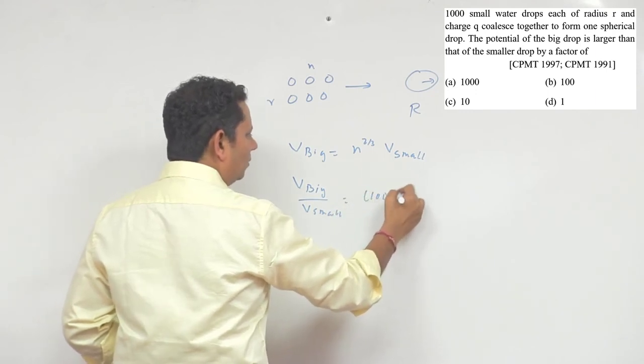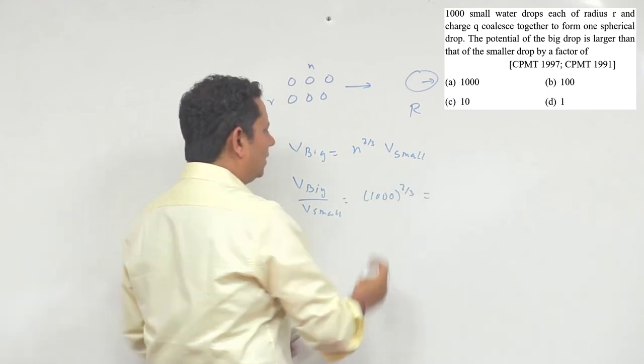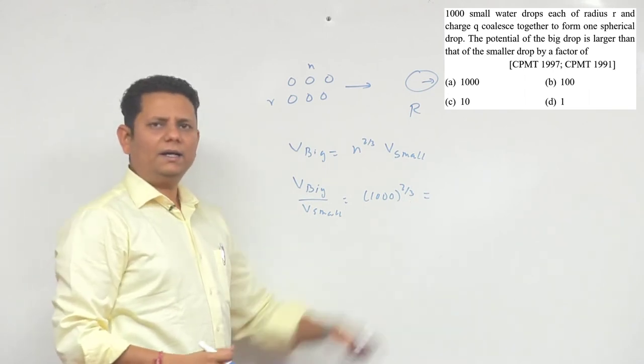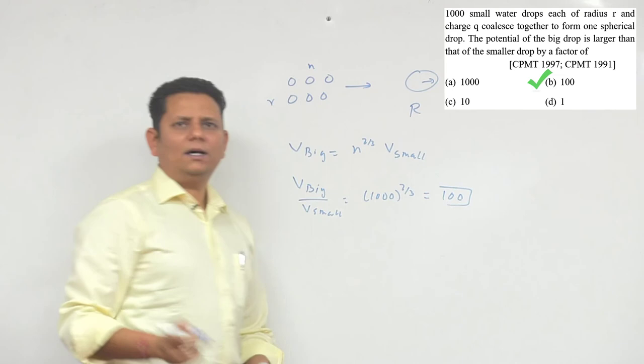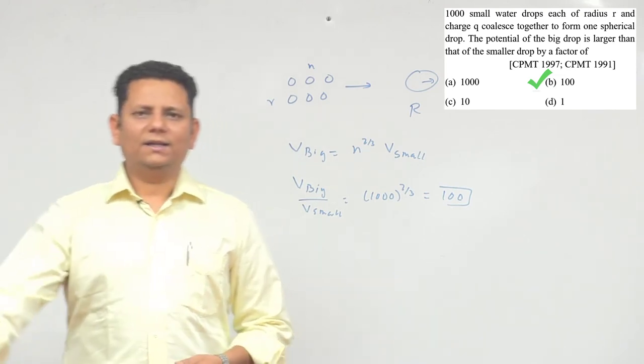equal to 1000 to the power 2/3. Now, 1000 is 10 cubed, so 10 squared will be 100. So based on this, option B, 100, would be the right answer.